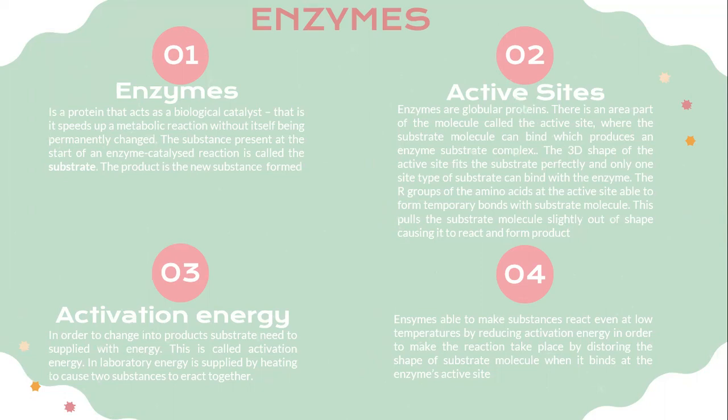Enzymes are globular proteins that have an area called the active site, where the substrate molecule can bind, producing an enzyme-substrate complex. The 3D shape of the active site fits the substrate perfectly, and only one type of substrate can bind the enzyme. The R-groups of the amino acids at the active site form temporary bonds with substrate molecules, pulling the substrate slightly out of shape, causing it to react and form products.